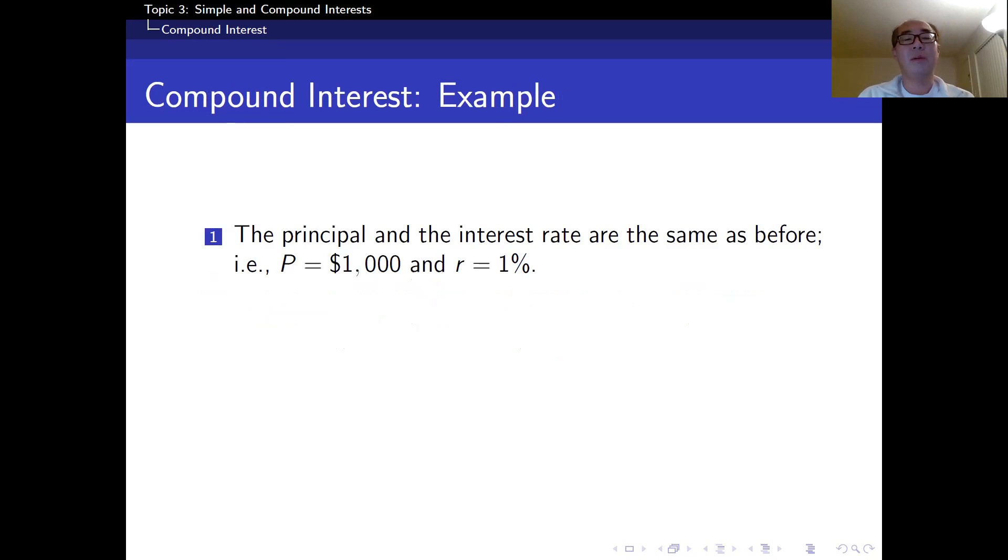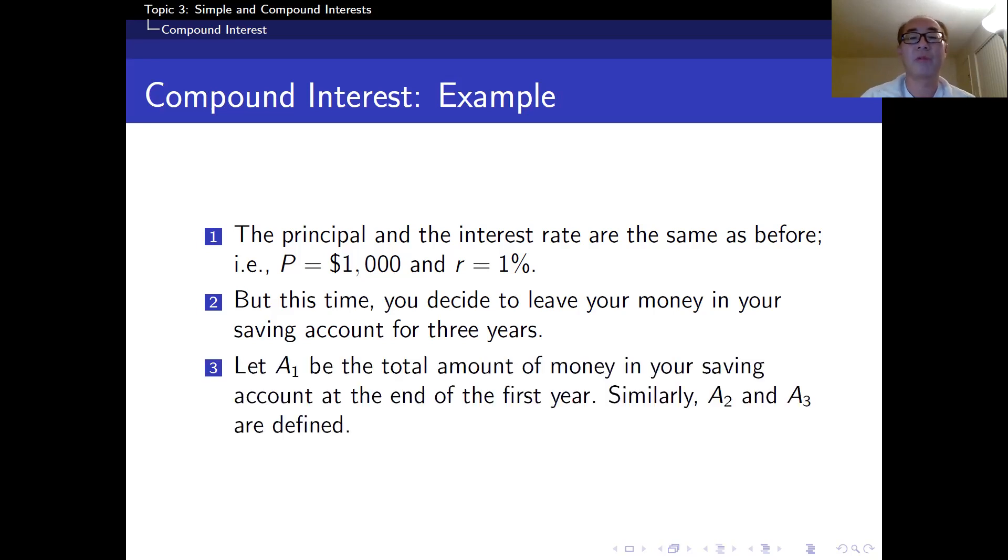So as before, let's say the principal is $1,000 and the annual interest rate is 1%. This time, you're going to leave your money in your saving account for three years. So here's a notation. A1, or formally it's called A sub 1 because 1 is in the small letter, is the total amount at the end of the first year. A sub 2 or A2 is amount after two years and A sub 3 or A3 is amount at the end of the third year.